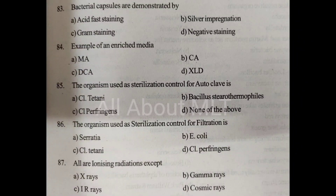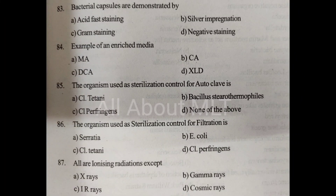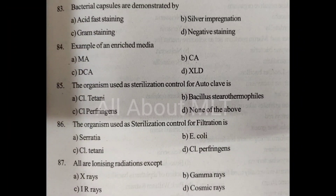The organism used as sterilization control for filtration is. Option A: Serratia. Option B: E. coli. Option C: Clostridium tetani. Option D: Clostridium perfringens. Answer is Option A: Serratia.